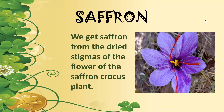Then we have saffron. From where do we get saffron? You can see a flower with petals in a purplish-blue color and three different red-colored long thin strands known as stigmas. These stigmas are part of the flower; once dried, they are taken out of the flower and used as saffron. This is where we get our saffron from.